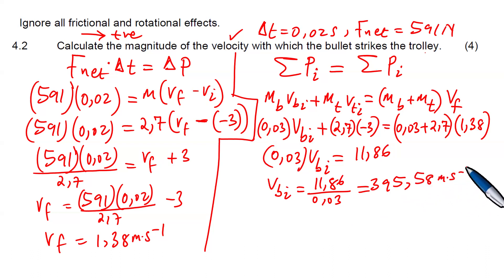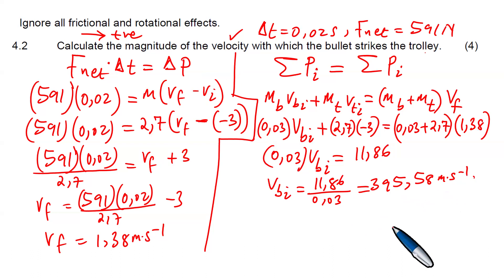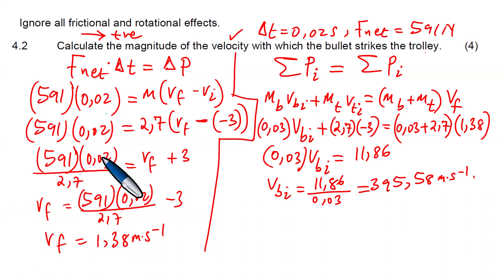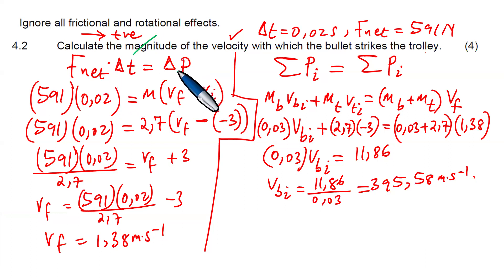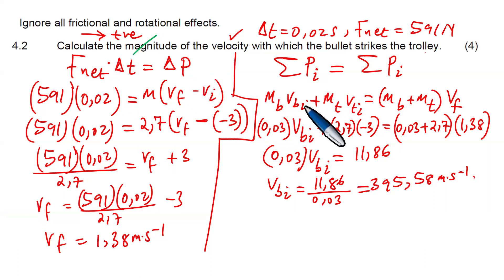We used the impulse formula: F_net × ΔT = change in momentum, which equals the change in kinetic energy. Impulse is the product of the net force and the change in time, and it equals the change in momentum. Momentum (P) is the product of the mass and velocity of an object.